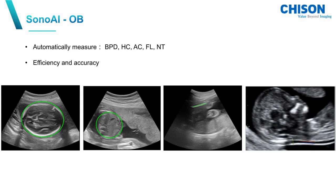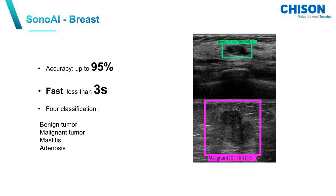The first one, SonoAI OB, is a technology that can automatically measure BPD, HC, AC, FL, and NT. It can improve your efficiency and accuracy during scanning. The accuracy of this technology can be up to 95%, and results are delivered very fast.